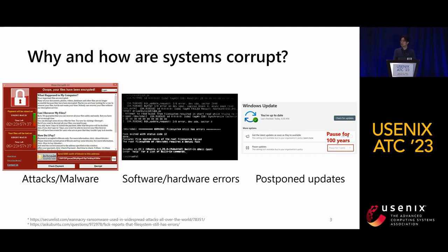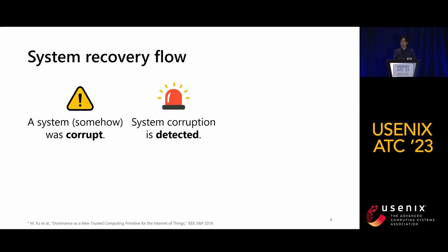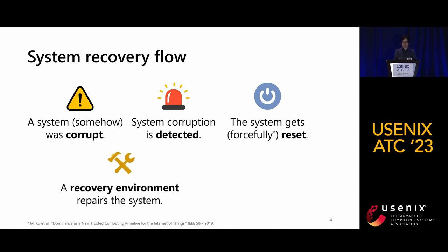Regardless of the root cause of system corruption, we must recover the system to use it again. I will explain the current recovery process in five stages. First, our devices get corrupted due to some attack, error, or mismanagement. Second, some time later, system corruption is detected, possibly relying on internal or external signals like telemetry. Third, we forcefully reset the system by physically pressing the power button or remotely sending management commands through IPMI or BMC. Fourth, the reset makes the system enter a recovery environment. Finally, after recovery, the system restarts and runs normally.